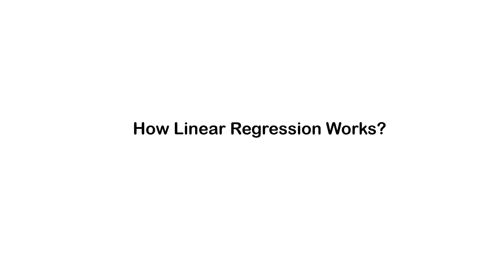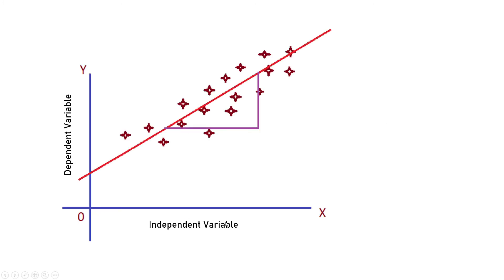How linear regression works? If we put the independent variable in the x direction and the dependent variable in the y direction, we can get the dots.